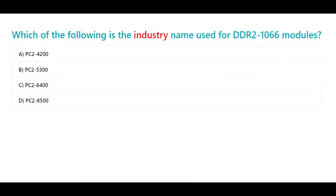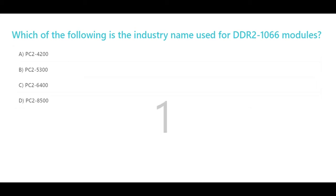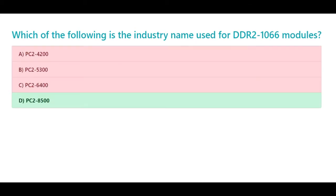Which of the following is the industry name used for DDR2-1066 modules? A. PC2-4200. B. PC2-5300. C. PC2-6400. D. PC2-8500. The correct answer is D. PC2-8500.